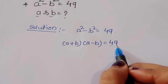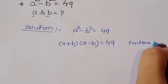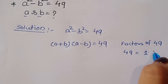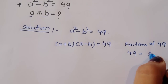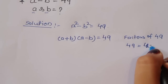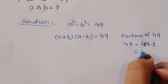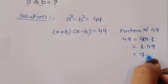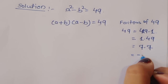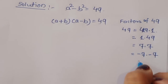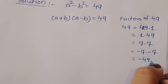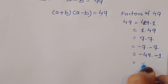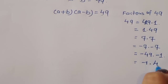First we have to find the factors of 49. The factors of 49 are: 49 times 1, and 1 times 49; next, 7 times 7; then minus 7 times minus 7, which gives 49; next, minus 49 times minus 1; and last, minus 1 times 49.